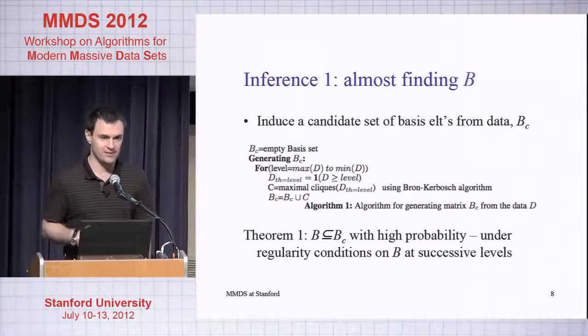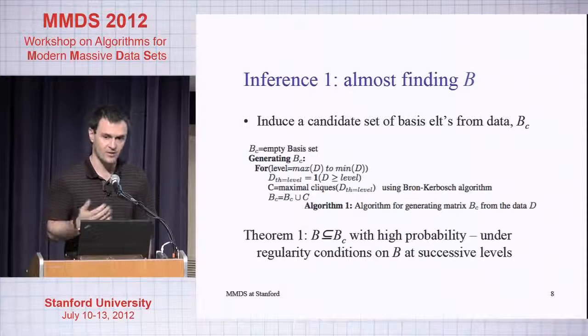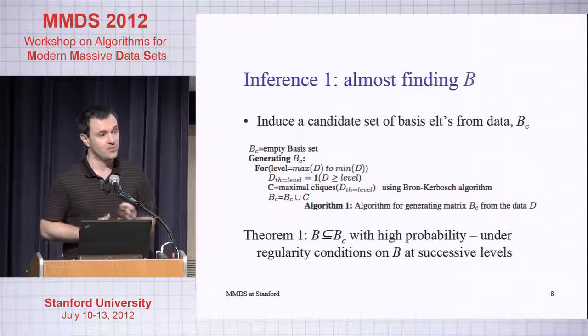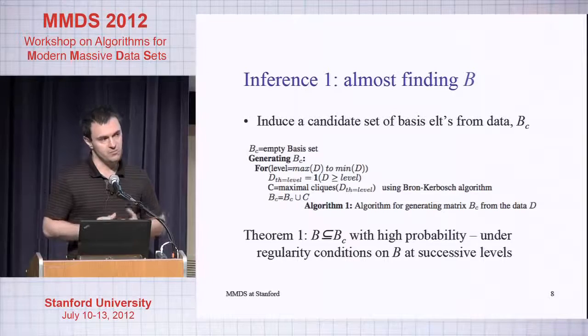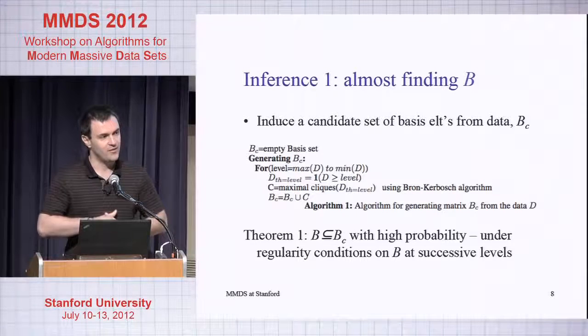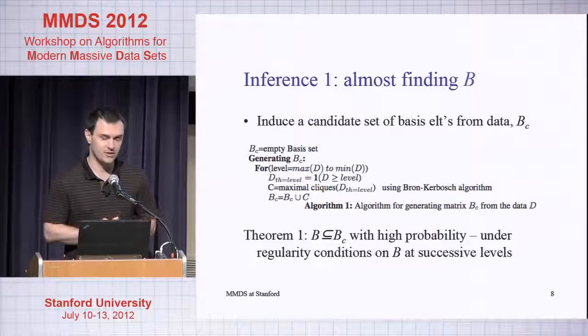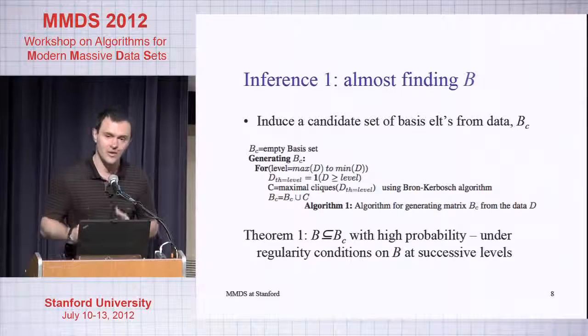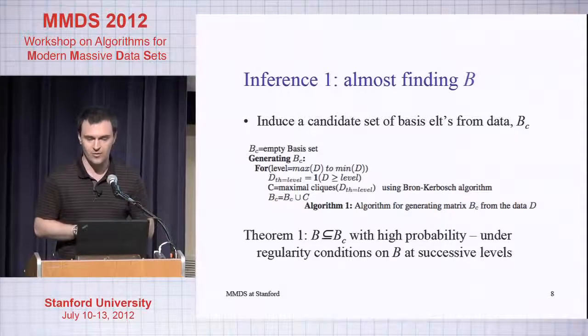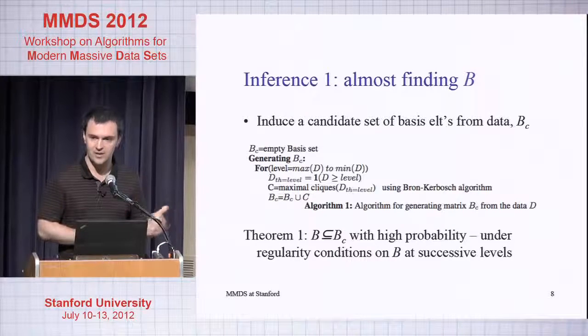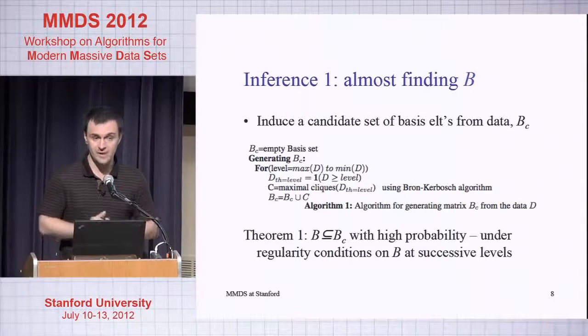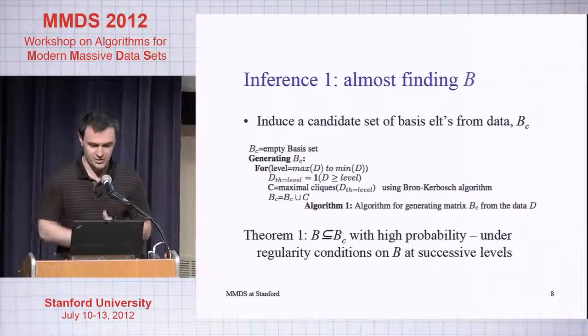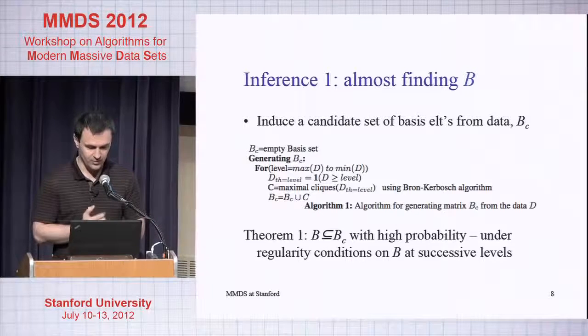I can prove that the matrix I'm going to find actually contains B and I can prove useful facts. For example, I can show that in general the number of columns of this matrix B' is the same order of magnitude as the number of columns in B. In practice it's twice as many columns.